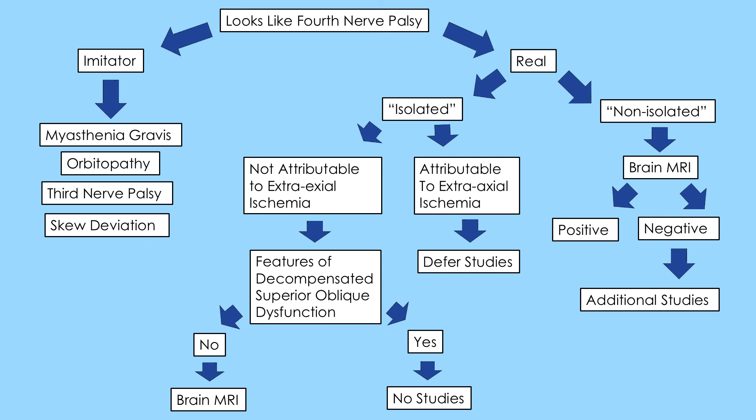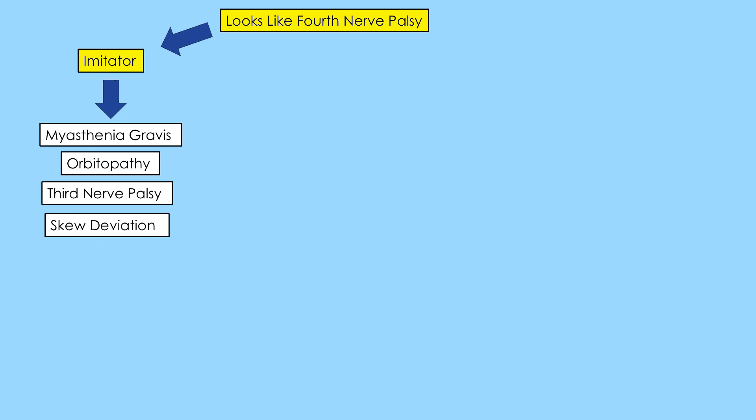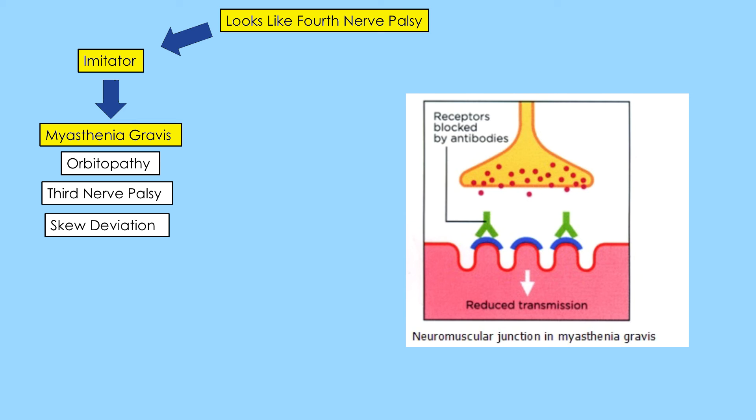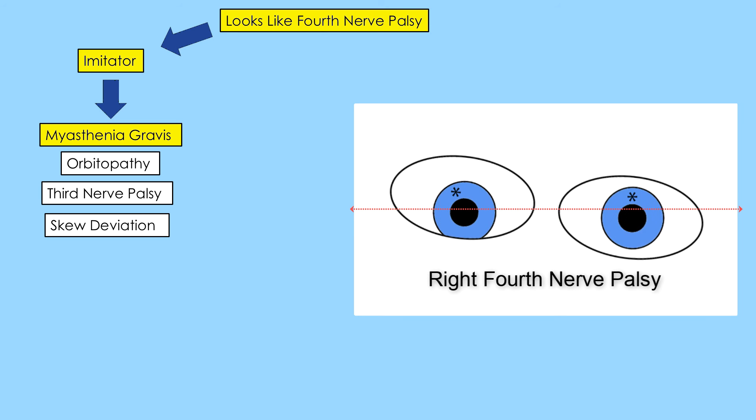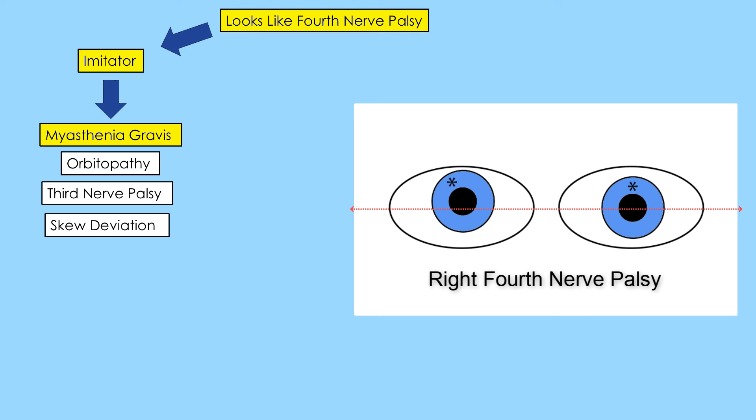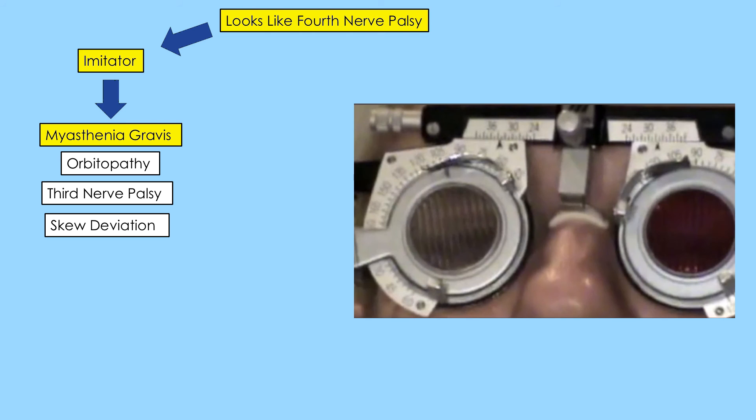Here is another way to approach diagnosis and management of non-traumatic fourth nerve palsy using a flow chart. First, make sure you have excluded the four imitators. Myasthenia gravis mimics any form of ocular misalignment, but it rarely fulfills the criteria of a fourth nerve palsy, which must obey the three-step test and display ex-cyclodeviation on double Maddox rod testing.